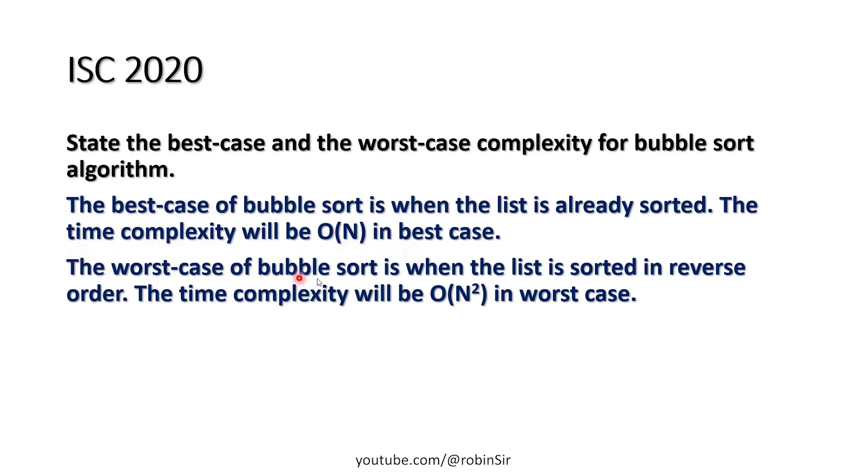Whereas the worst case for bubble sort would be when the list is sorted in reverse order. Let's say you want to arrange the elements in ascending order, but the elements right now are arranged in descending order. So in that case, the time complexity would be Big O of N squared.